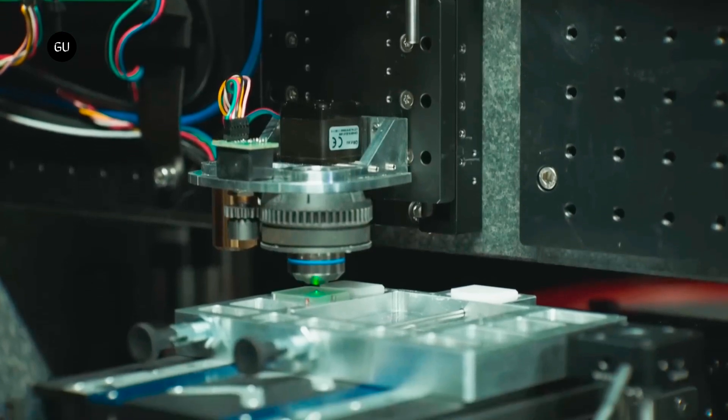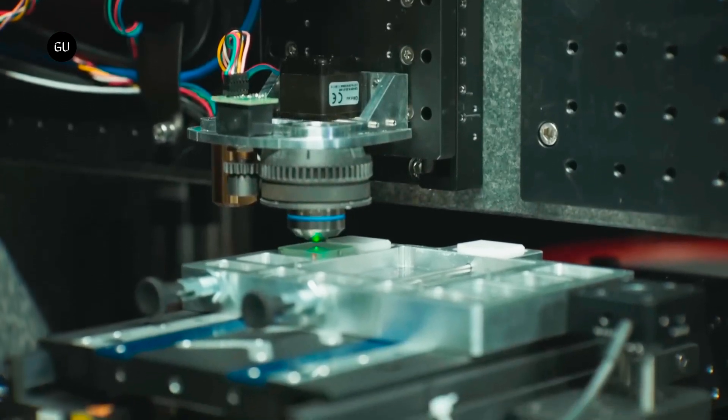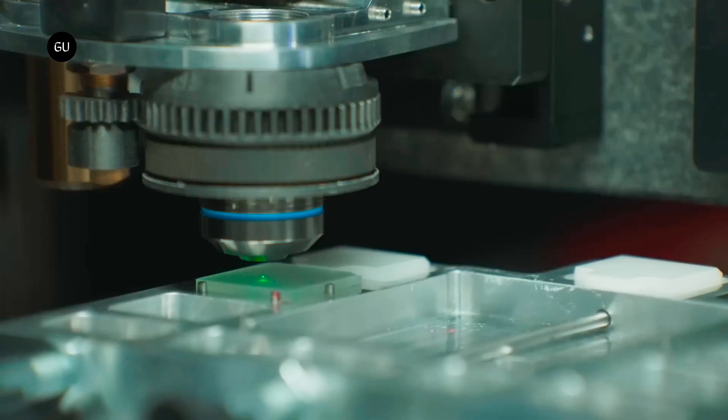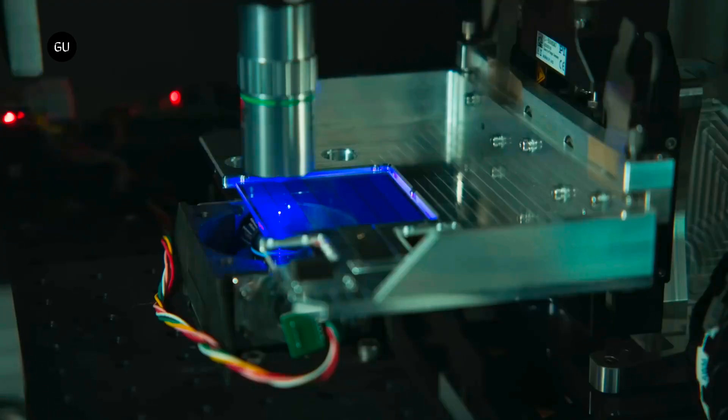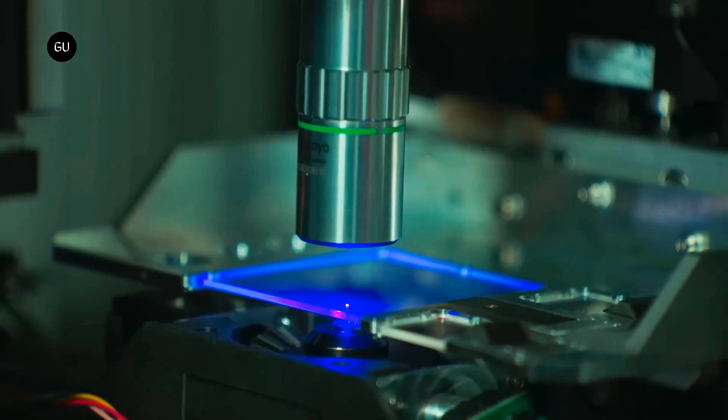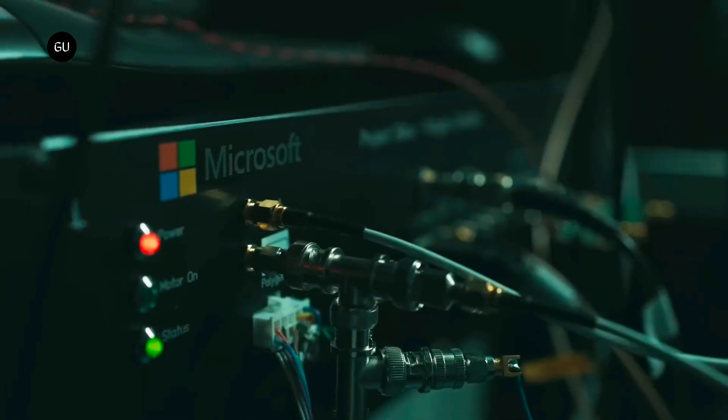It's been nearly four years since we first heard about Project Silica, a Microsoft Research project tasked with storing digital data on sheets of glass. At the time, Microsoft was able to successfully store a copy of Superman 1978 on a piece of glass roughly the size of a drink coaster.